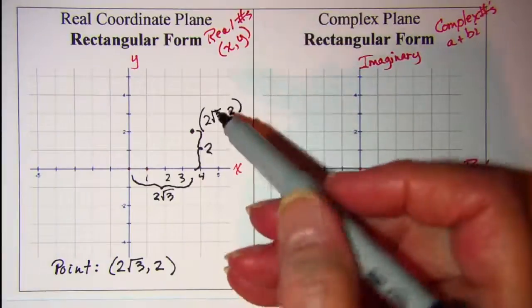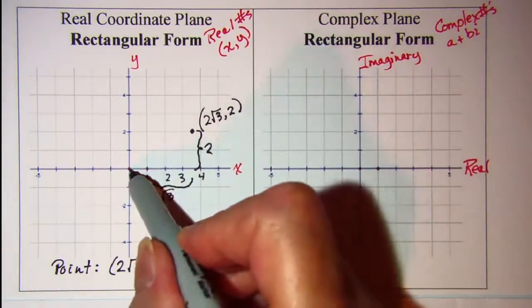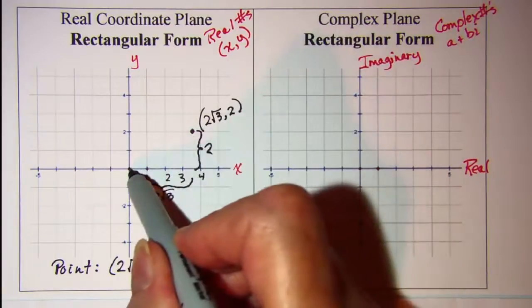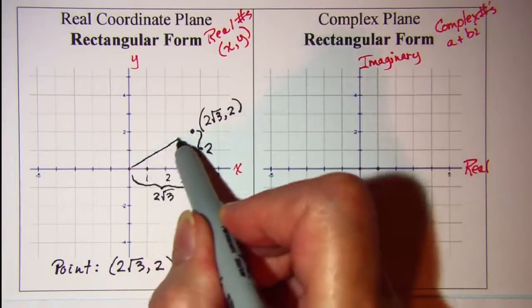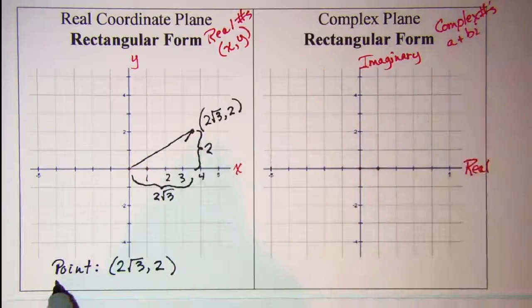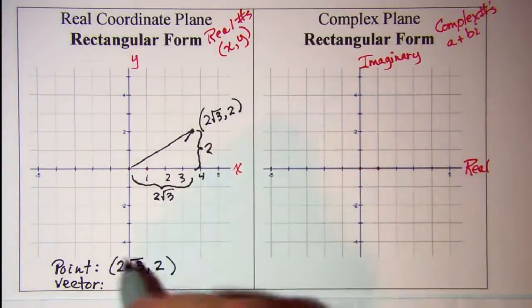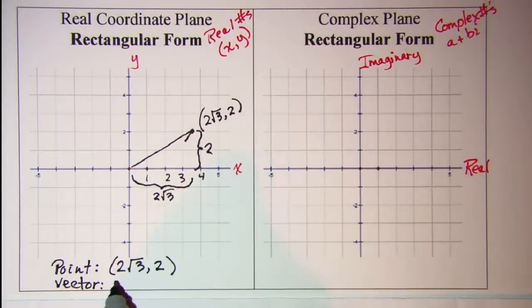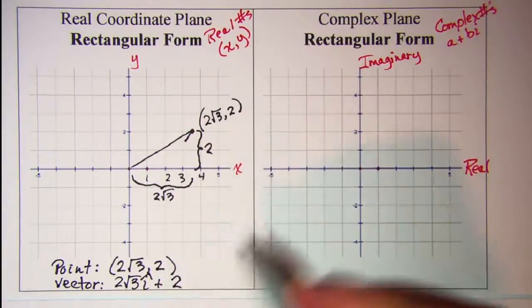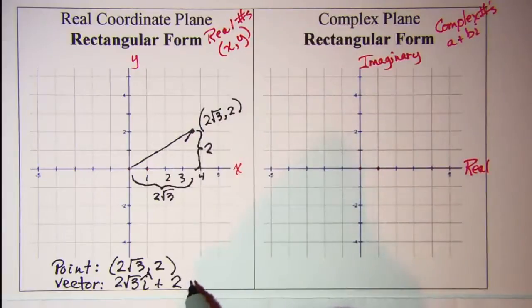So this distance is 2√3 and this distance is 2. Now if we wanted to talk about this vector that goes from the origin out to the point, we would write this in a little bit different notation. Sometimes you'll see it with the ordered pair notation, but for the vector you'll sometimes see the horizontal component 2√3 with an i vector notation and then the vertical component 2 with a j vector notation.